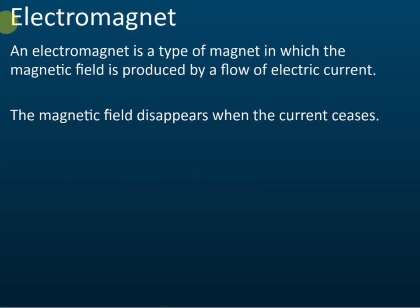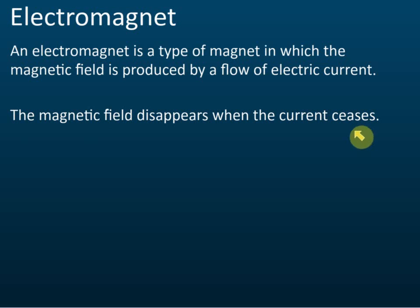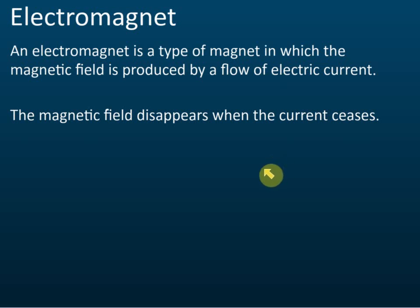All magnetic fields are produced by current. That is electromagnetism — as long as there's a flow of current, there is a magnetic field, and the magnetic field disappears when the current ceases. This is the electromagnet. For a permanent magnet, whether there's a current or not, there is still a magnetic field. But for an electromagnet: with current, there is a magnetic field; no current, no magnetic field.